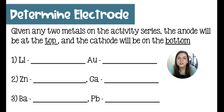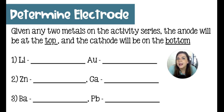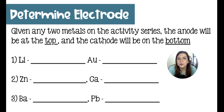In a redox context, you can use the activity series to quickly determine which is an anode and which is a cathode in reference to your metals. The ones at the top of the list are the good losers, so they will make great anodes. The things at the bottom of the list are not so great at losing, so they make good cathodes. Looking at these three pairs, you should be able to determine which is the anode and which is the cathode.